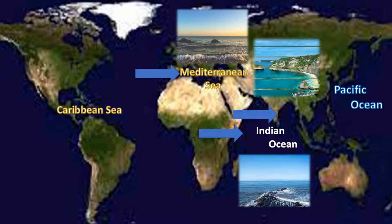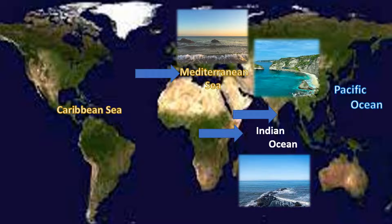Bays are smaller compared to oceans and seas. They are found along coastlines and are partially surrounded by land. They are often shaped like a semicircle or a curve and are usually not very deep. Bays have salty water because they are connected to the ocean.